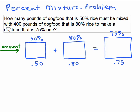Here's the problem: how many pounds of dog food that is 50% rice — meaning half of the dog food is pure rice — must be mixed with 400 pounds of dog food that is 80% rice to make a dog food that is 75% rice? We're taking two different concentrations of dog food and trying to make something where the rice content is somewhere in between.